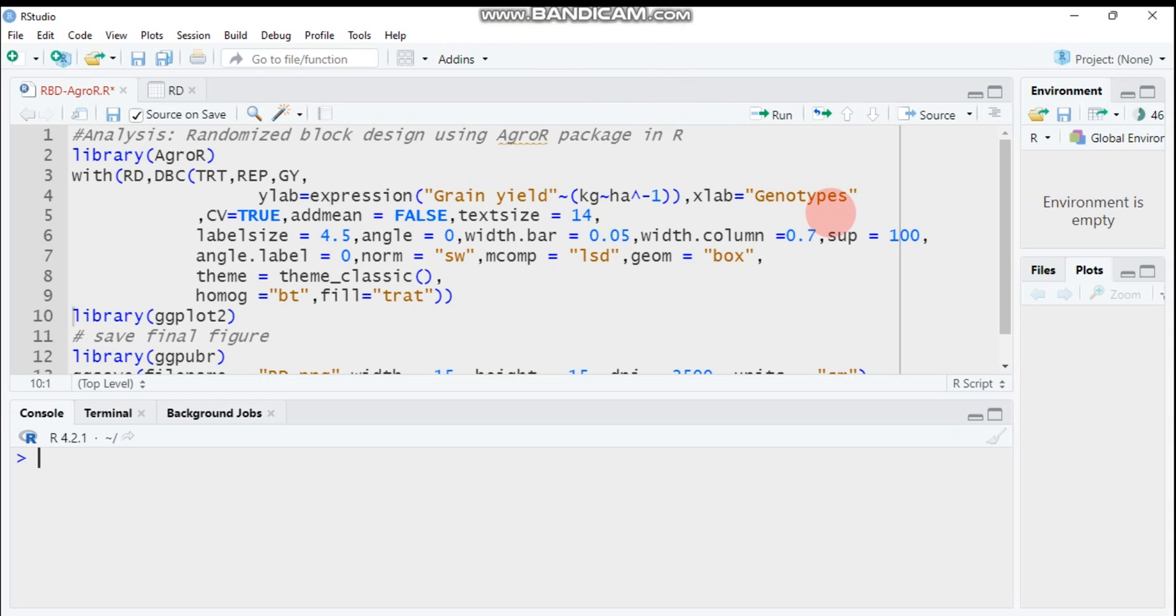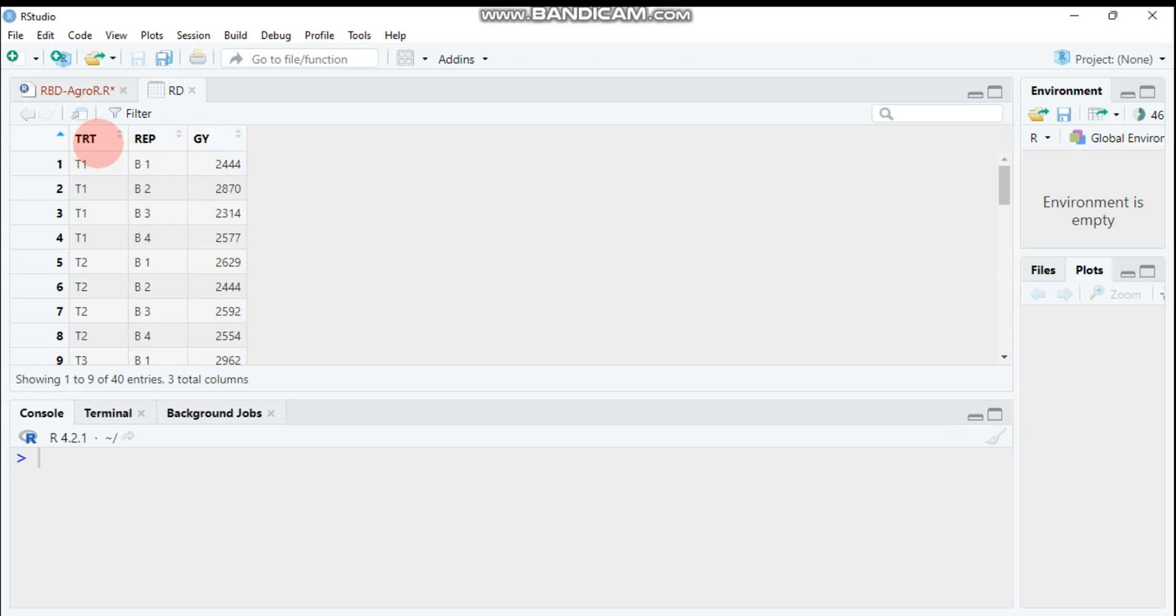Hello guys, welcome to my channel. Today we will discuss randomized block design using the Agro package. I already imported my data which contains three columns: the first one is treatment, and I have ten treatments.